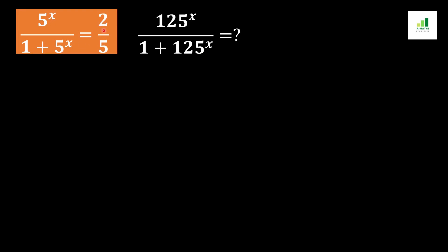In the first step, we consider 5^x equals y and replace 5^x with y. So the equation becomes y over (1 + y) equals 2 over 5.